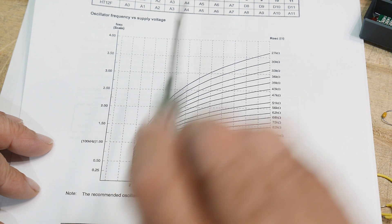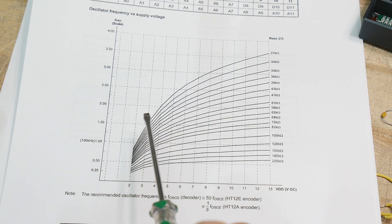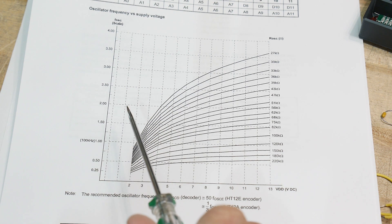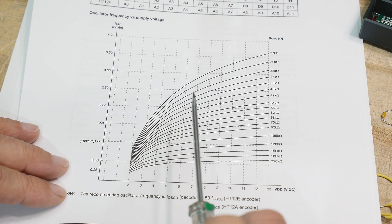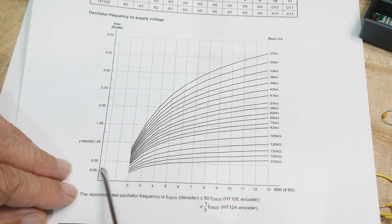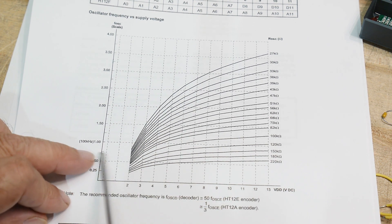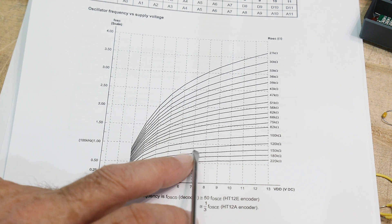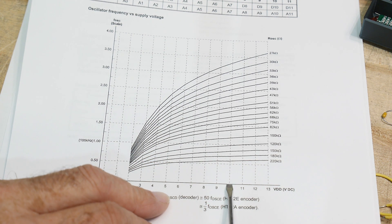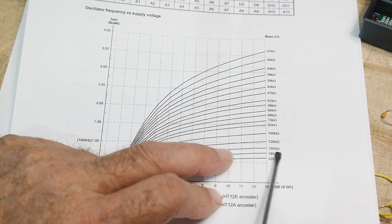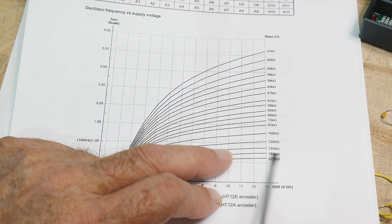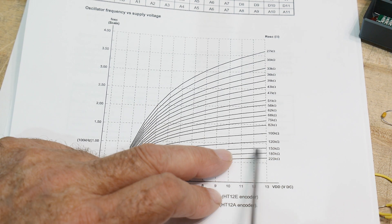So if the encoding was at 1.2 kilohertz, then the decoding should be around 60 kilohertz. So 60 is kind of like down here. And then you can say, okay, well at 10 volts, I'm running my part at 10 volts. At 10 volts, about 60, I need about 150K or 180K resistor, something like that.